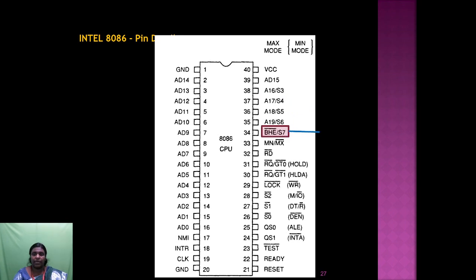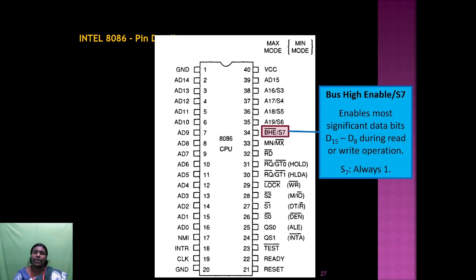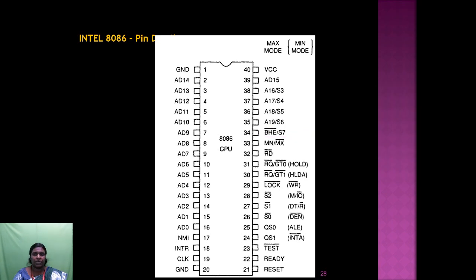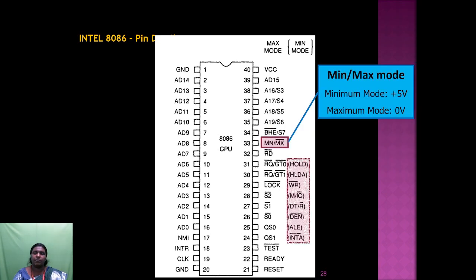BHE (Bus High Enable) is also called S7. It enables the most significant data bits D8 to D15 during read or write operations. S7 is always 1. The BHE pin has these possible states: 0,0 means hold; 0,1 means high byte from odd address; 1,0 means low byte from even address; 1,1 means no selection.